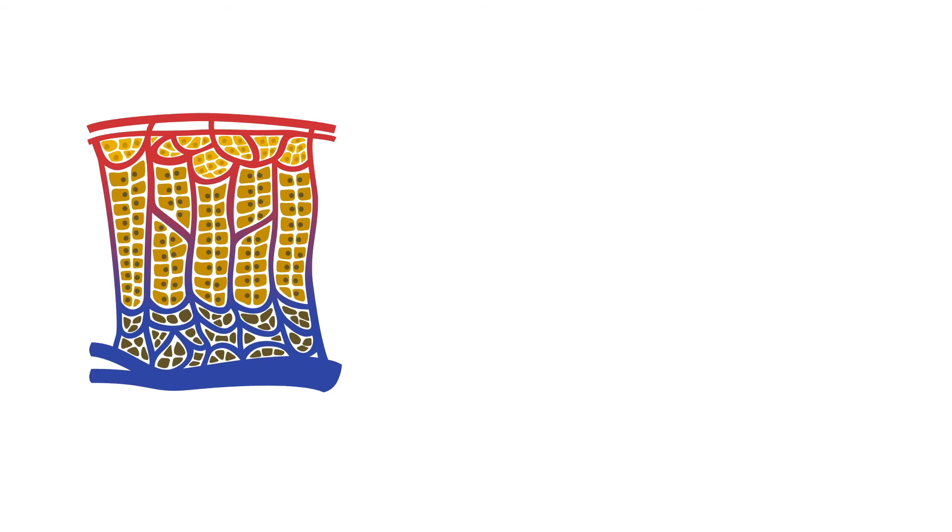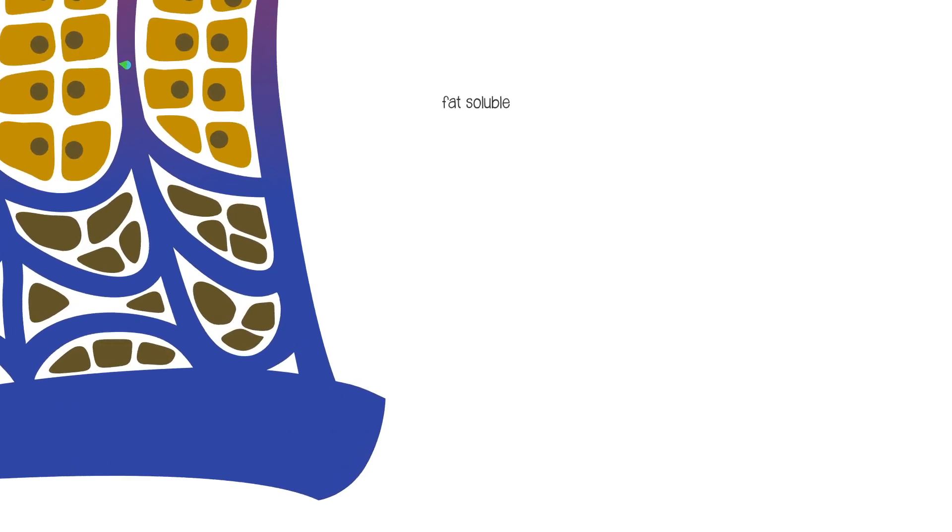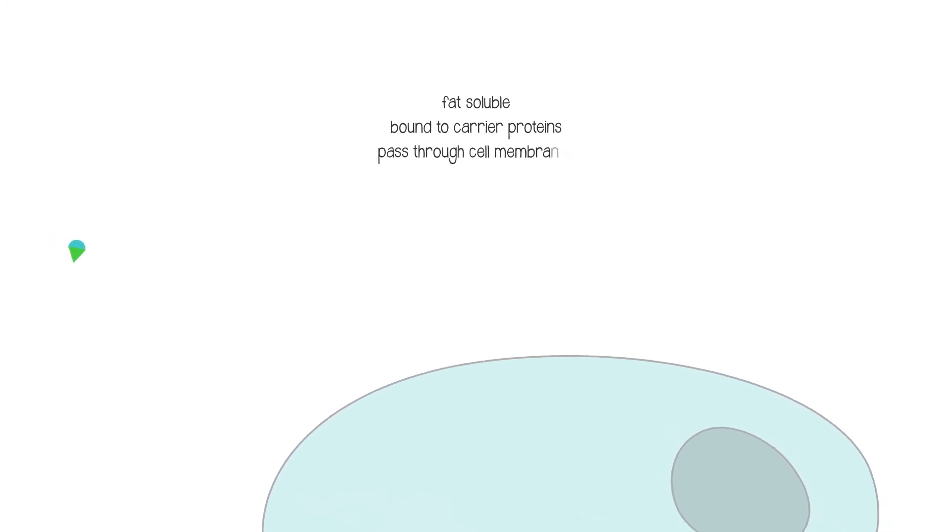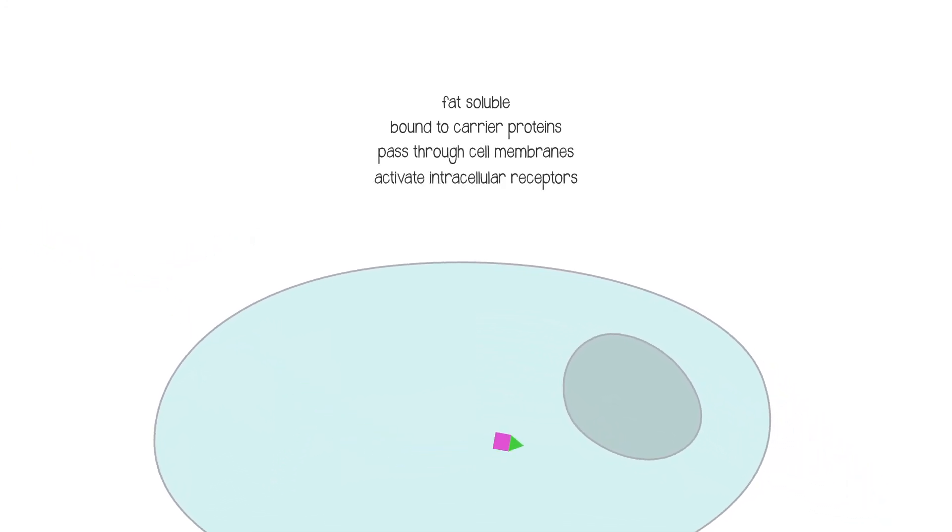Because these are typical steroid hormones, they are fat-soluble, travel in the blood bound to carrier proteins, pass through cell membranes, and activate intracellular receptors, with the effect of changing patterns of gene expression.